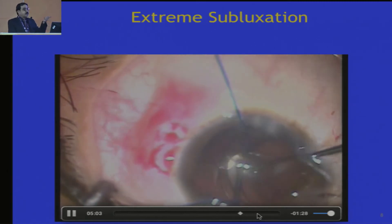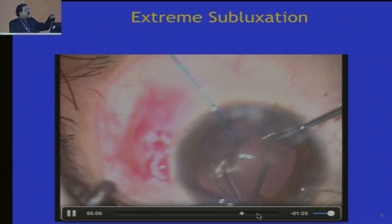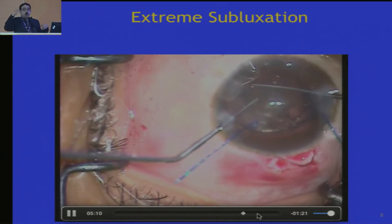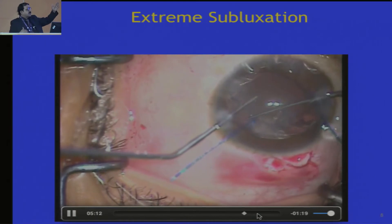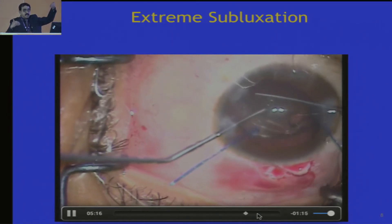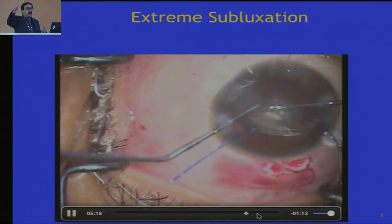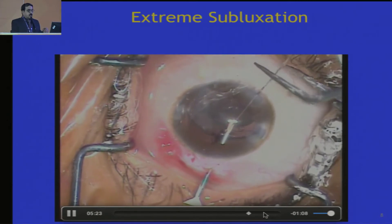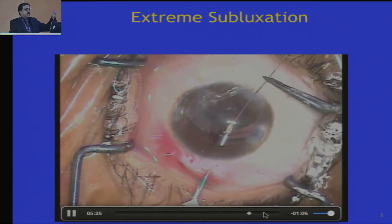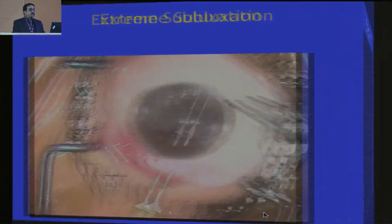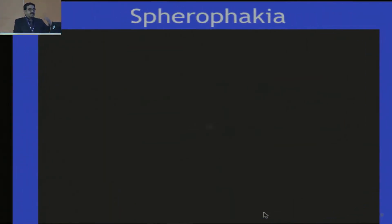Placing an intraocular lens in such conditions is also important. Here I am placing the intraocular lens through the nasal side — because the subluxation is on the temporal side. If I try from the temporal side, negotiating the capsule is difficult. You have to do a good suturing, and in case you need to, check the centration as shown.